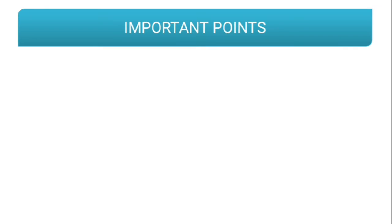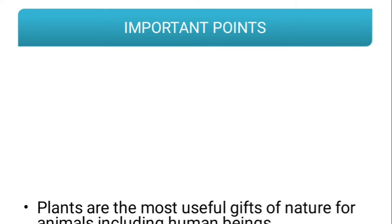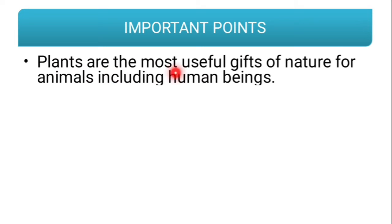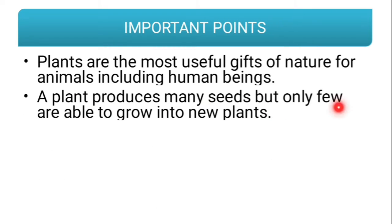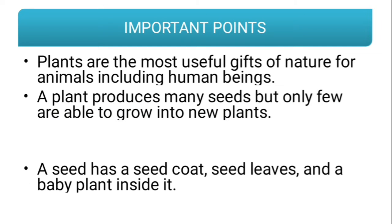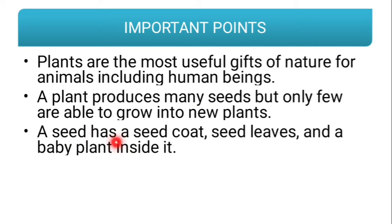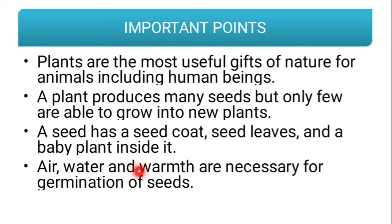The important points from the chapter: plants are the most useful gifts of nature for animals including human beings. Plants produce many seeds but only few are able to grow into new plants. A seed has a seed coat, seed leaves, and a baby plant inside it. Air, water, and warmth are necessary for germination of seeds.